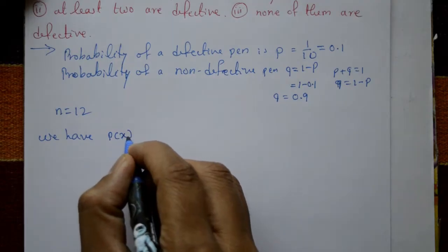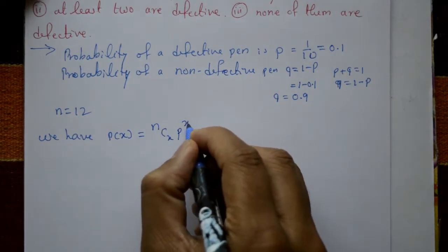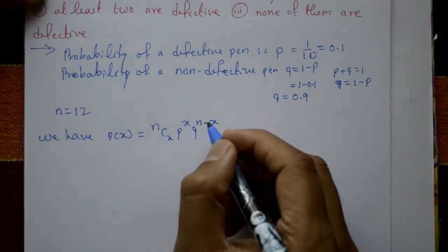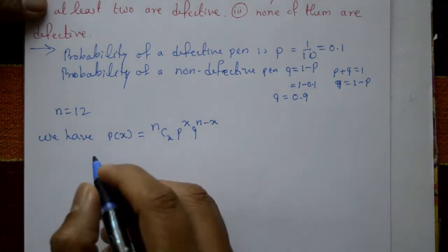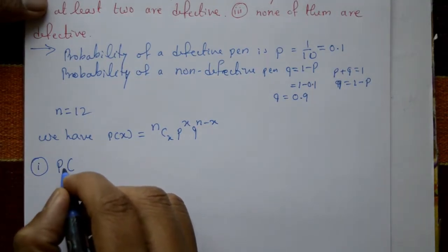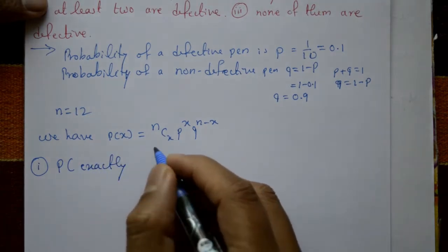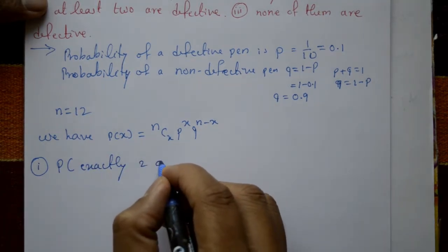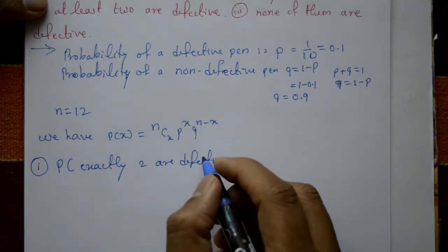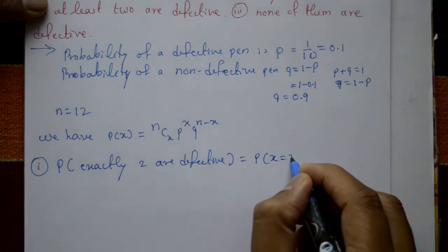The binomial distribution formula is P(X) = nCx × p^x × q^(n−x). For the first case, we need the probability that exactly two are defective, so we find P(X = 2).